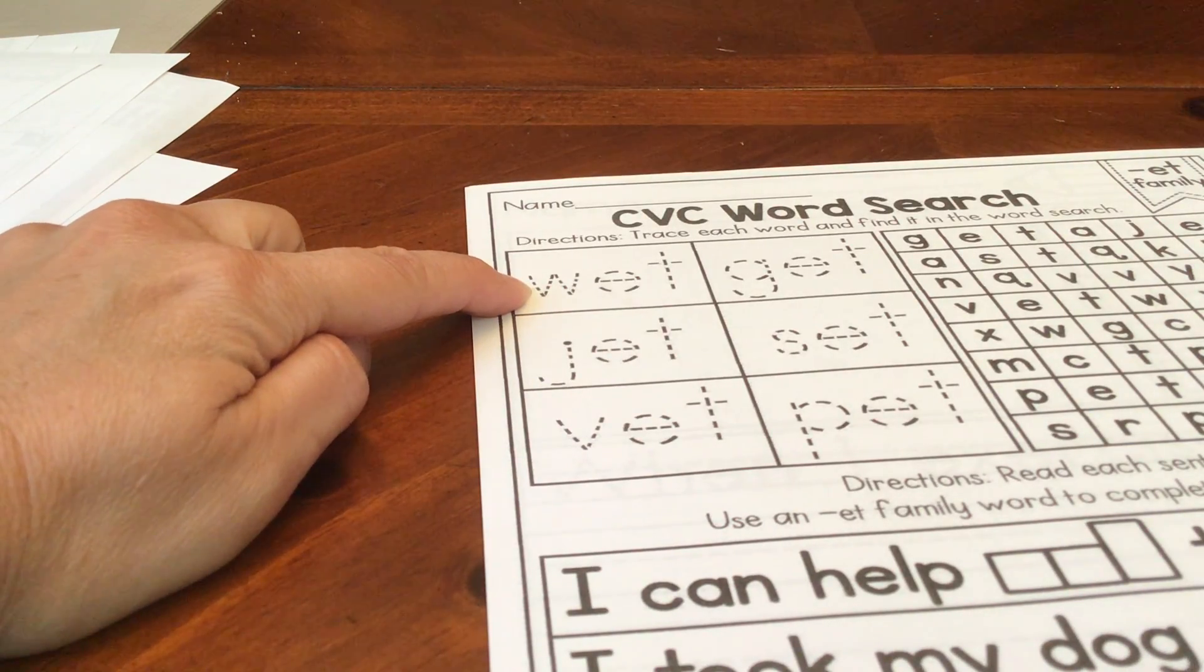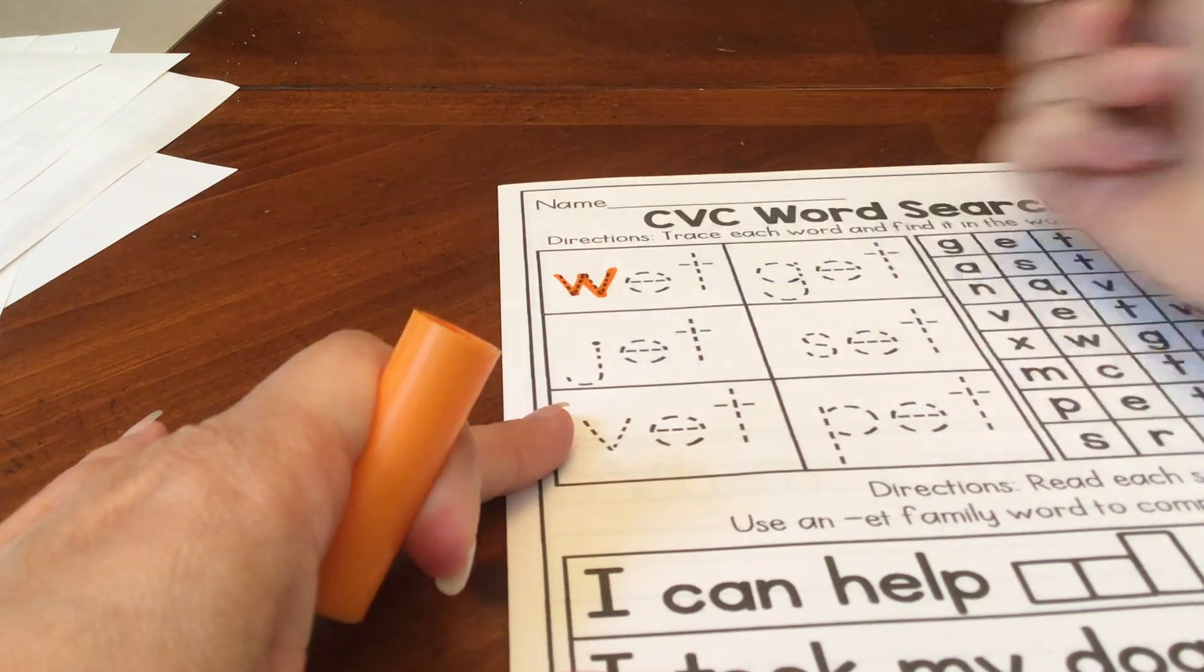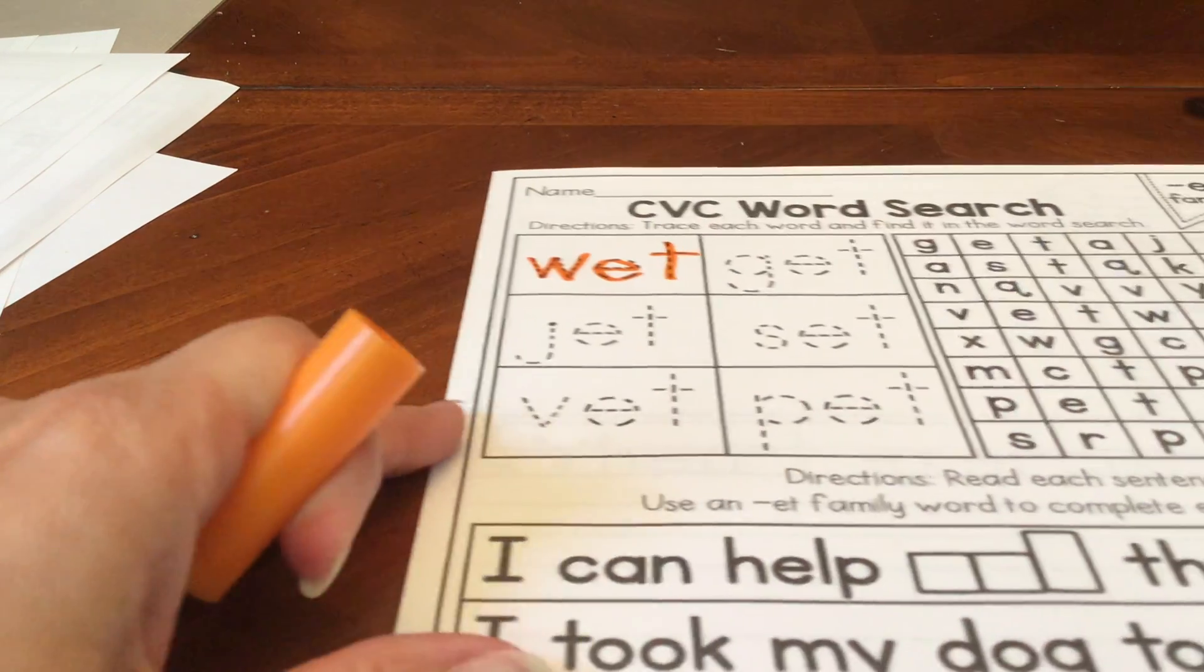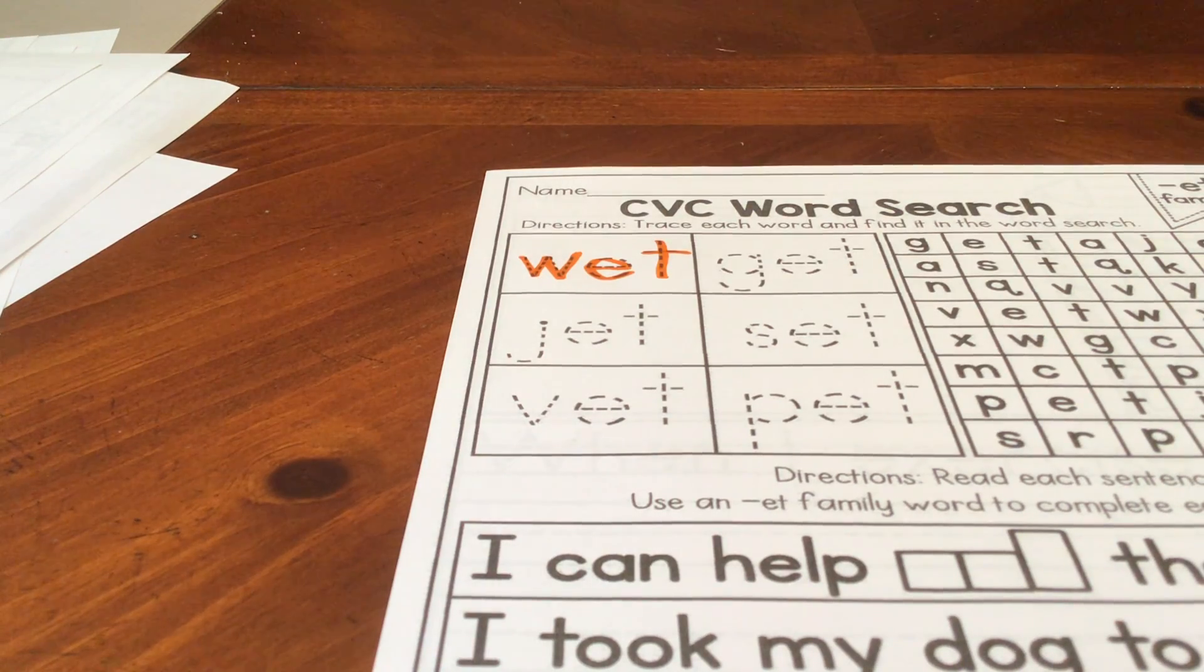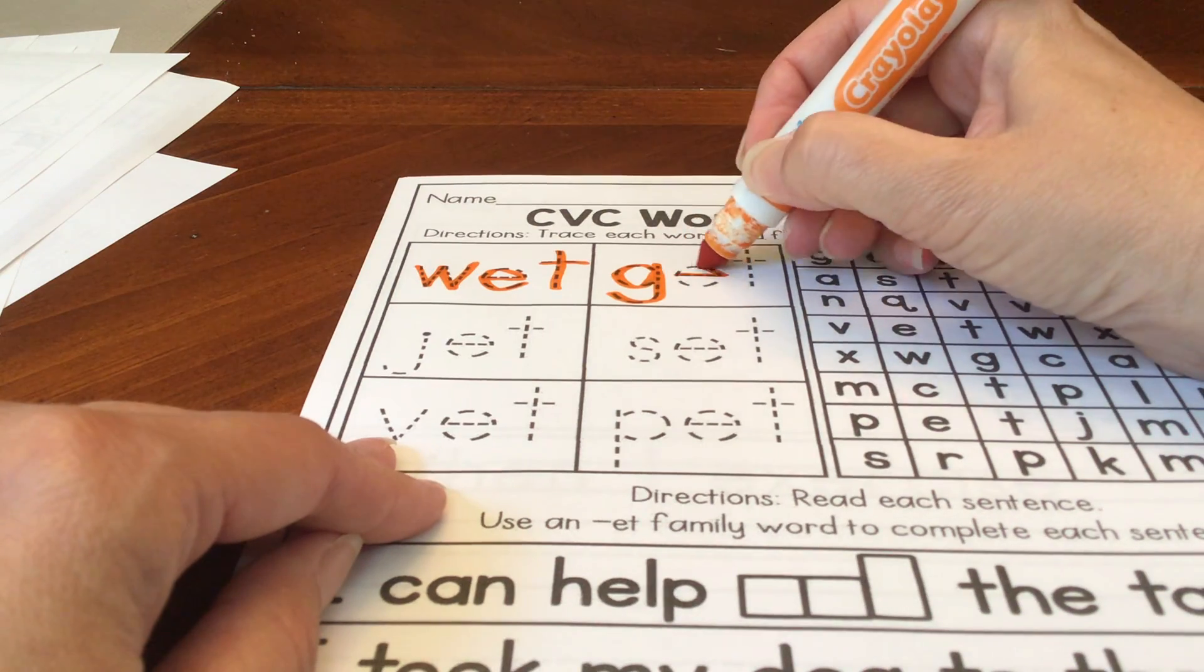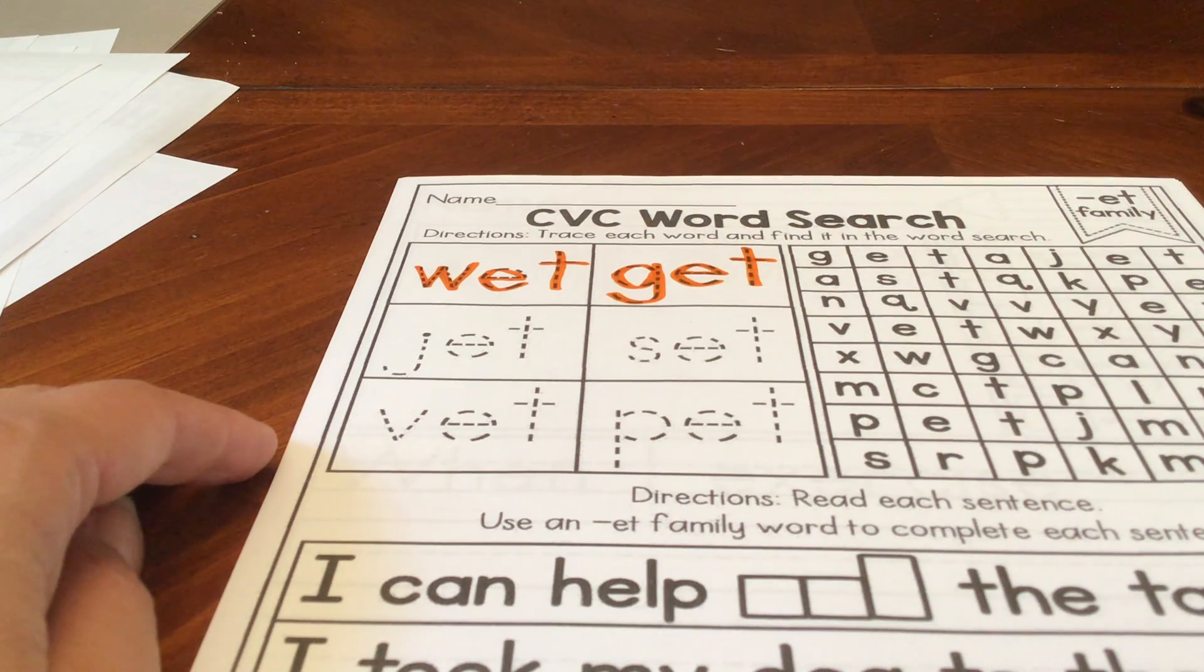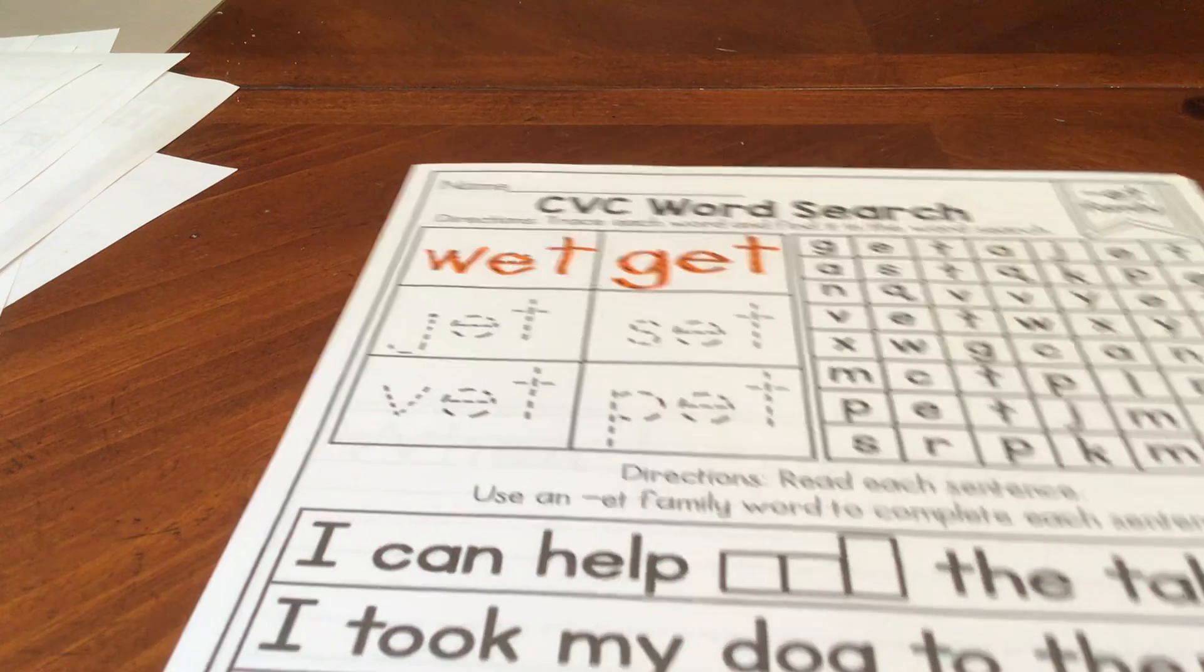First, our words are here. We need to trace them so that we can read them. Trace W. E. T. Wet. Wet. The first word is wet. Let's do one more. G. E. T. Get. Get.